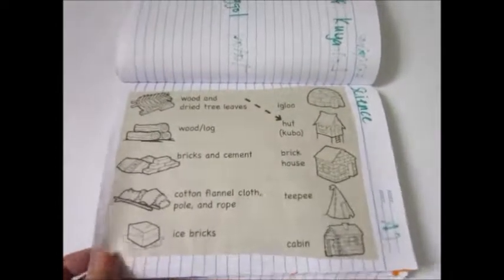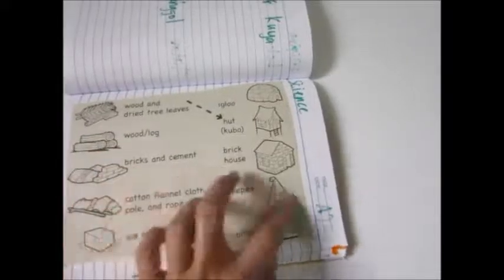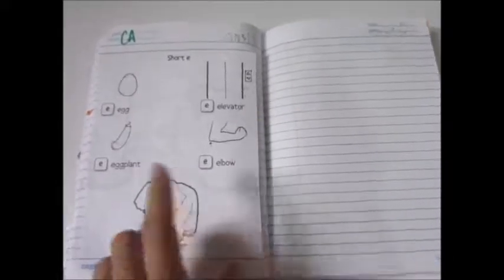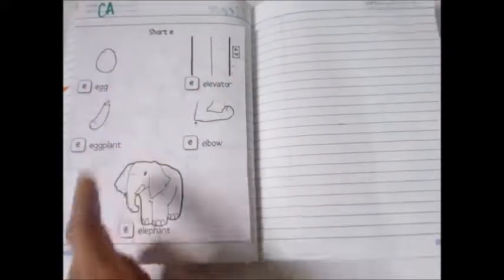And then for science, he will just connect this. For CA, he will just read these sight words.